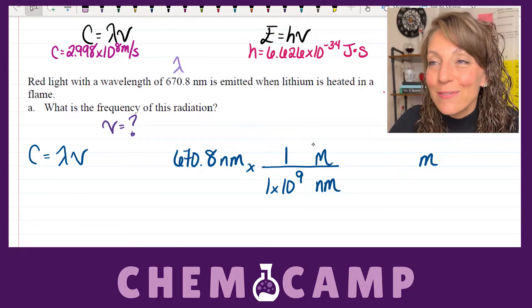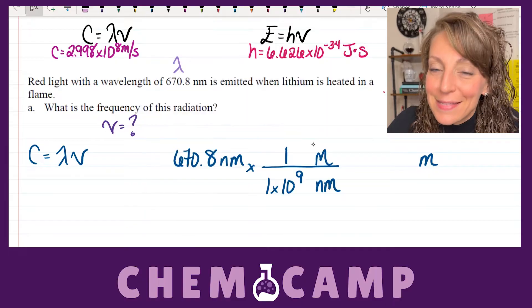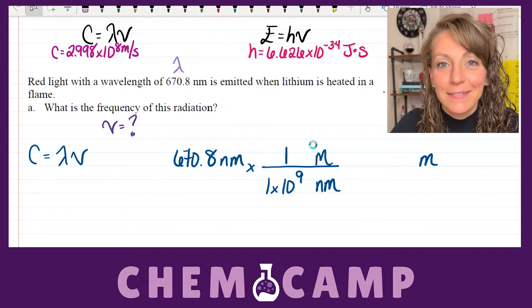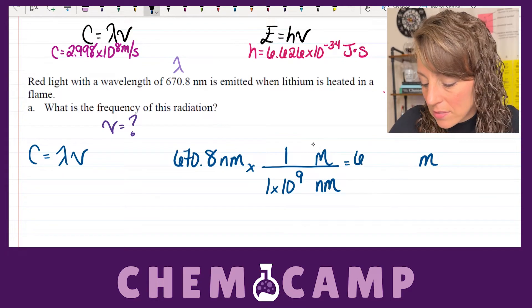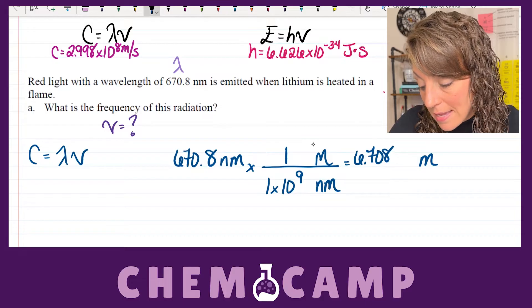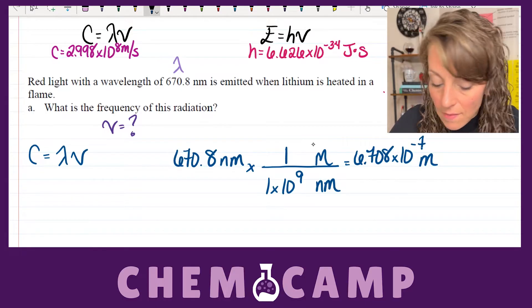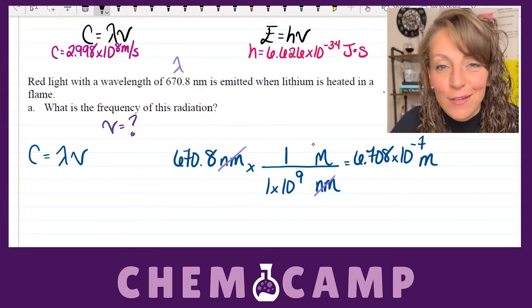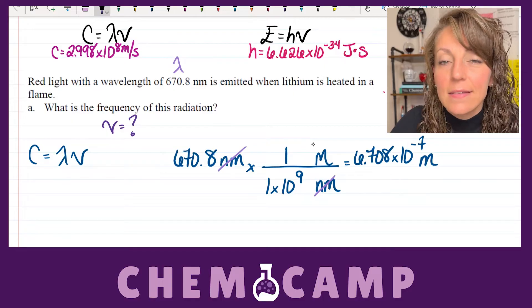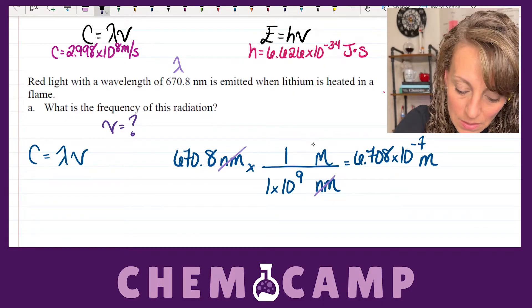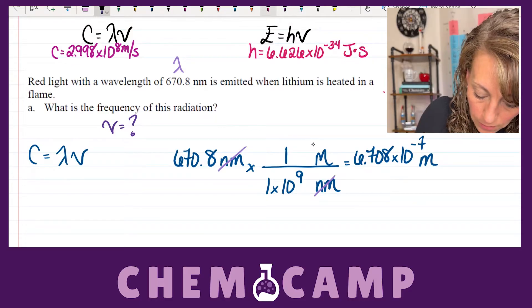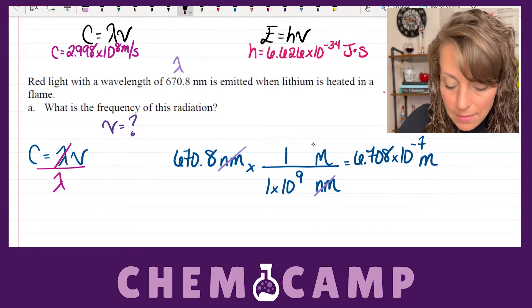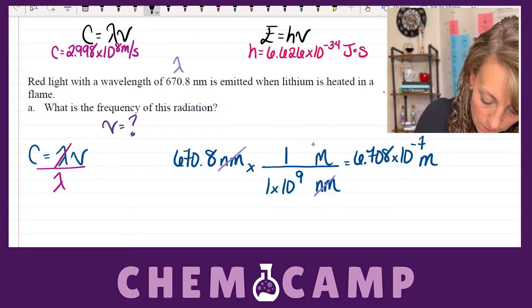Setting up dimensional analysis, I'm going to carry the nanometers to the bottom of my ratio and directly relate nanometers to the base unit meters. For every one meter, I have 1 times 10 to the ninth nanometers. If you need help remembering that, just think nano 9, because nano means 10 to the ninth. So 1 times 10 to the ninth nanometers for every one meter, which gives me 6.708 times 10 to the negative 7 meters for this wavelength. Then I should be set to rearrange my formula to solve for the frequency.